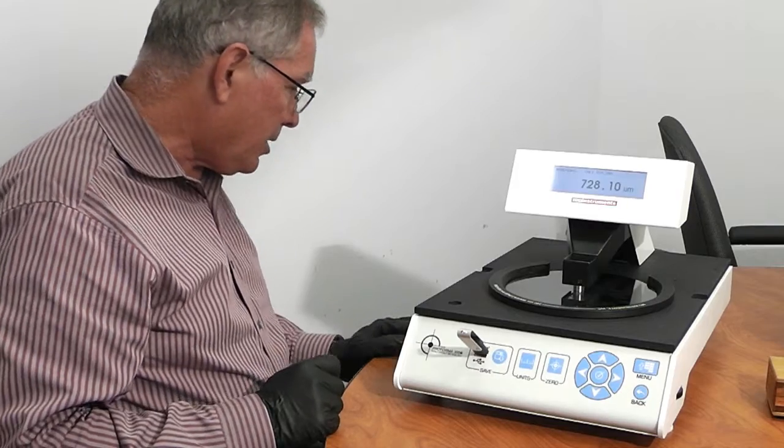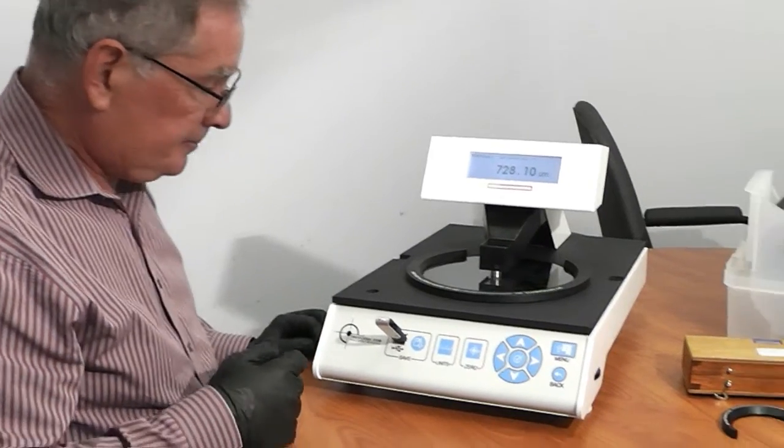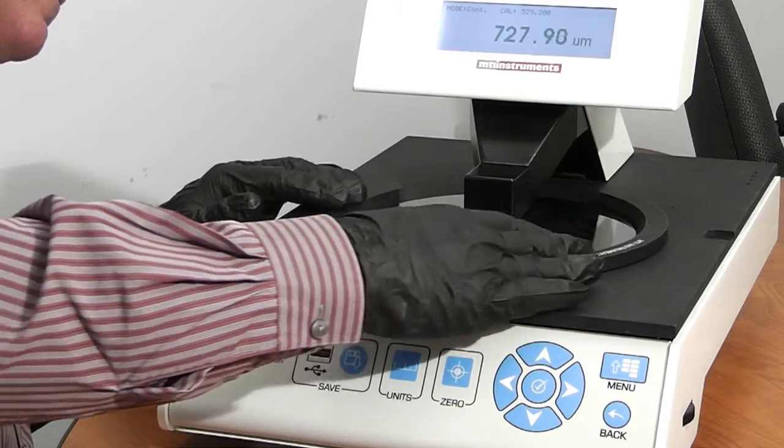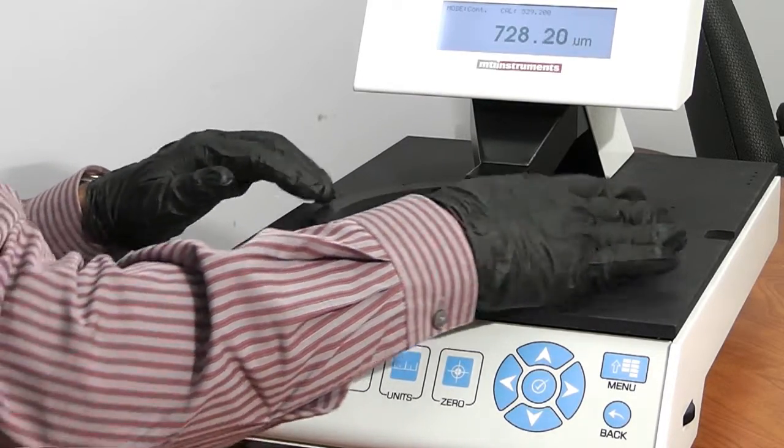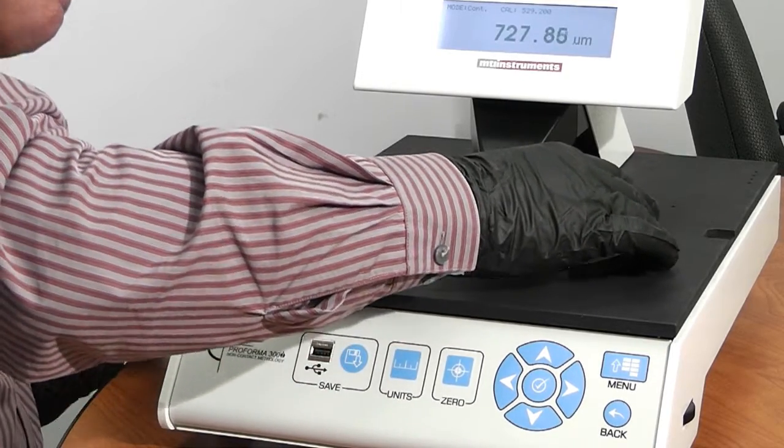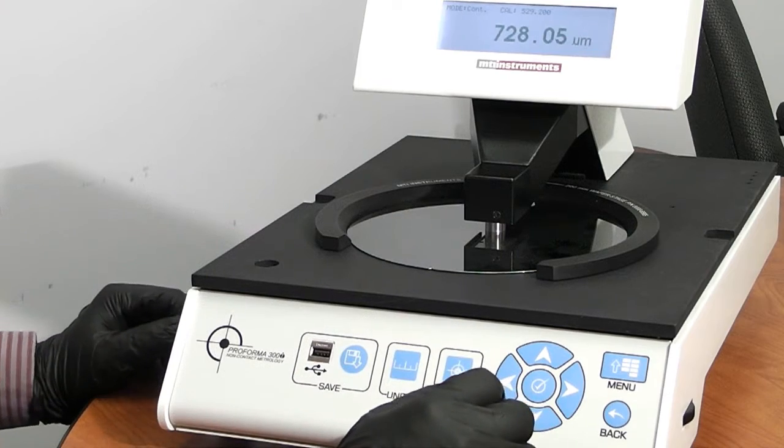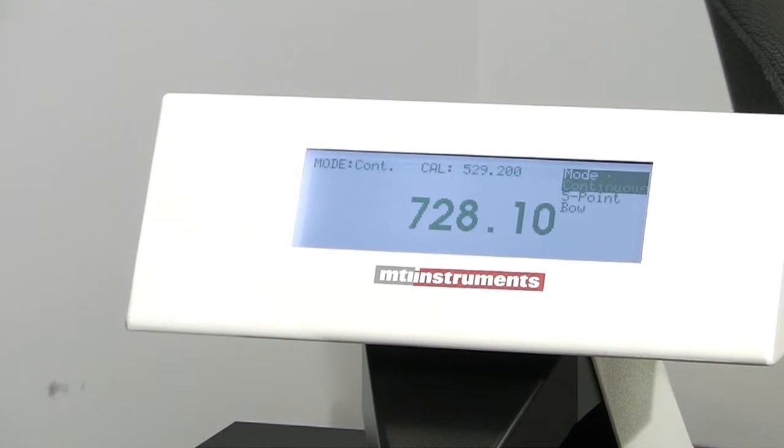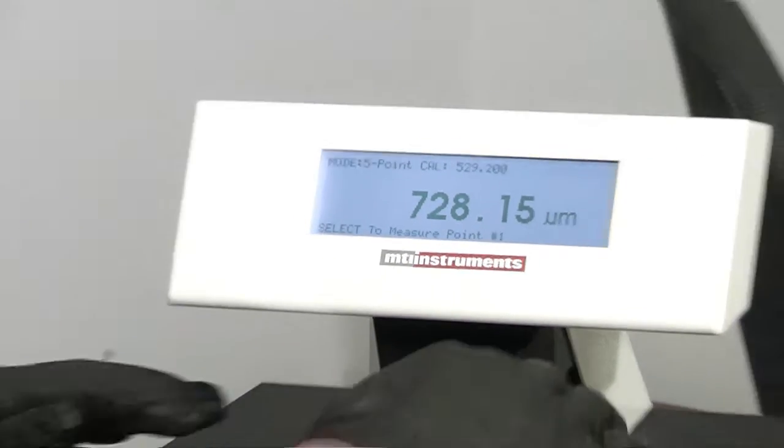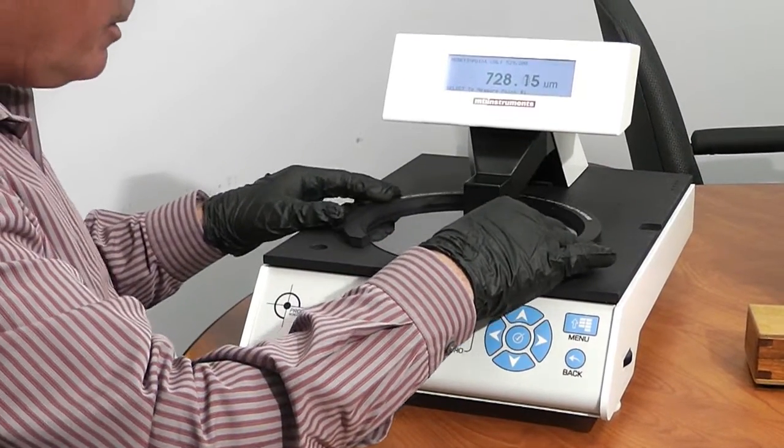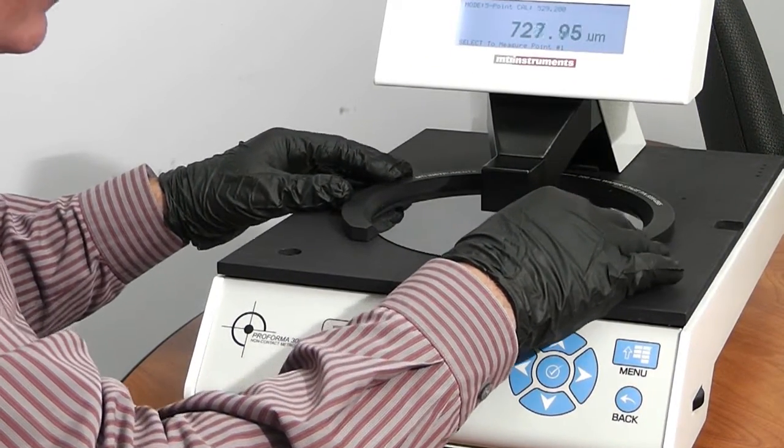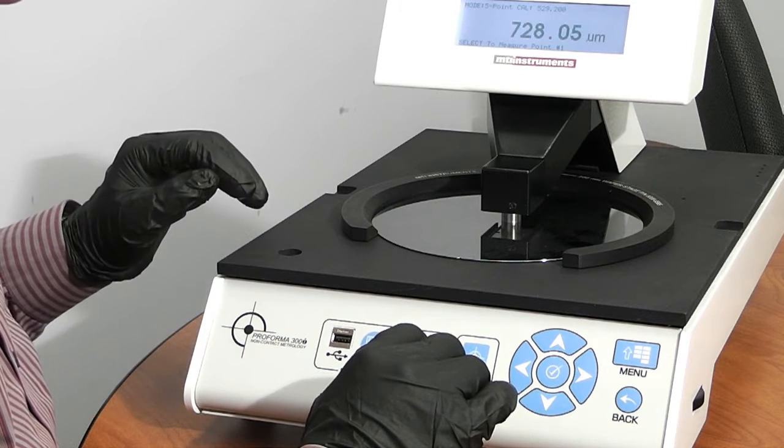The next thing we're going to do is we're going to measure the total thickness variation. So I'm going to take the thumb drive out. We'll stick with the same wafer here. So we're going to menu, and the next thing we're going to do is select mode, and we're going to do five point. So ideally what we do is we would set the pins, but just to show you quickly how we work this is we're going to look at five points around the wafer, and we're going to save these, and then it'll calculate the total thickness.